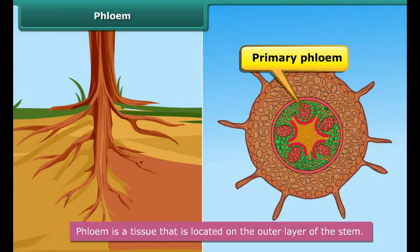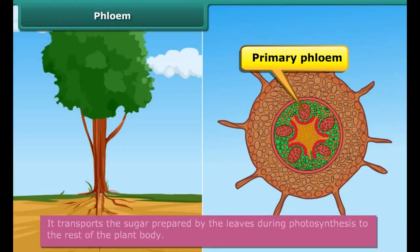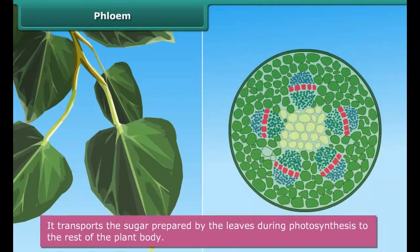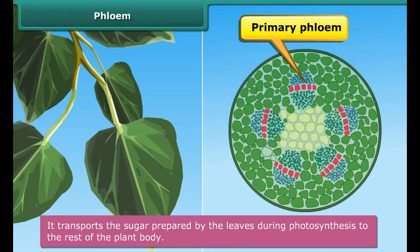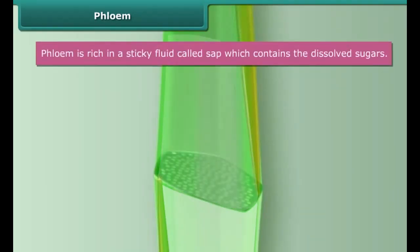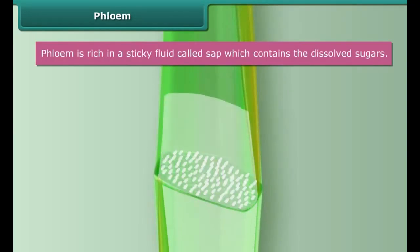Phloem is a tissue that is located on the outer layer of the stem. It transports the sugar prepared by the leaves during photosynthesis to the rest of the plant body. Since it transports sugar, phloem is rich in a sticky fluid called sap which contains the dissolved sugars.